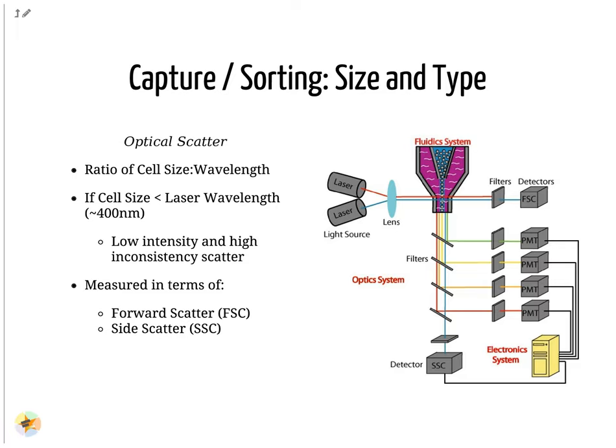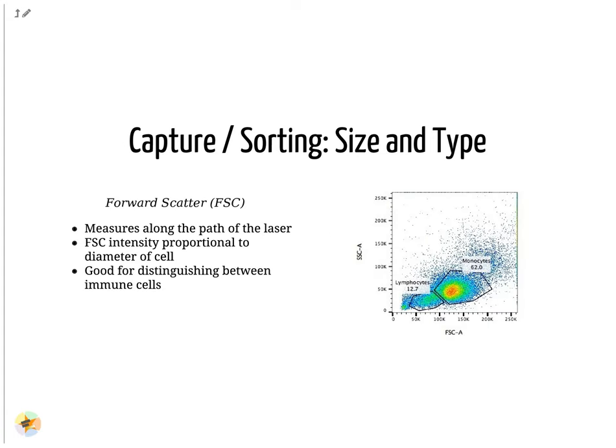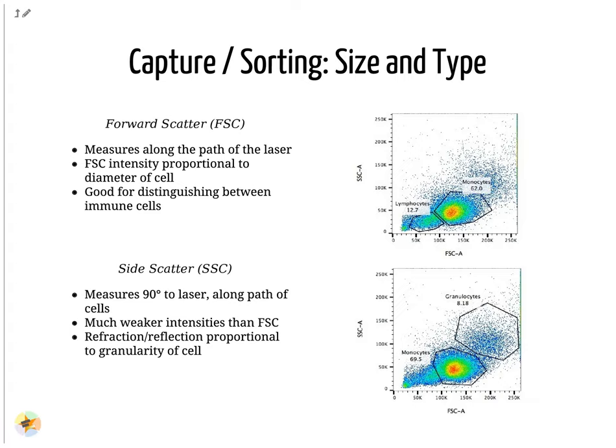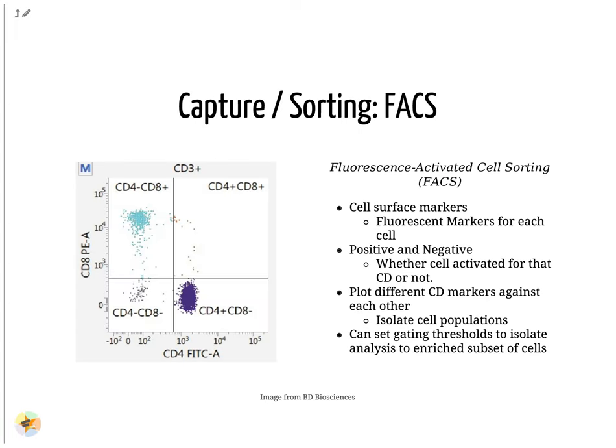Optical scatter properties can be used to probe size and consistency of the cell, where cells with a smaller size than the laser wavelength yield lower intensities and more inconsistent scatter patterns. There are two main types of optical scatter: forward scatter and side scatter. Forward scatter is aligned with the main laser and measures the diameter of the cell, which is ideal for distinguishing different cells by their size profiles, for example monocytes, which are typically larger than lymphocytes, as seen on the x-axis of the example image. Side scatter is perpendicular to the main laser and measures the granularity of the cell, ideal for distinguishing cells with less defined internal structures, such as the granulocytes on the y-axis of the example image. Cells can also be gated and characterized by their cell surface markers via FACS. By plotting different surface marker intensities against one another, cells can be separated, gated, and labeled based on these fluorescent properties.